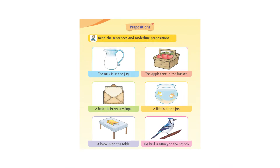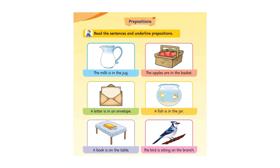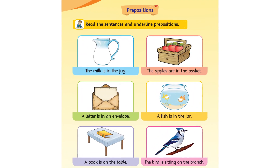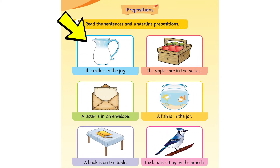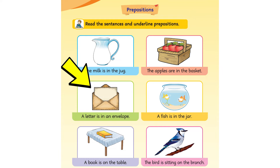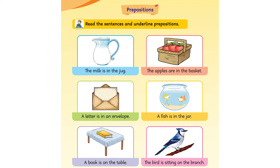Now let us read the sentences and underline the preposition. The milk is in the jar. The apples are in the basket. A letter is in an envelope. A fish is in the jar.